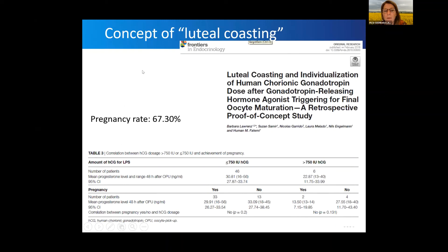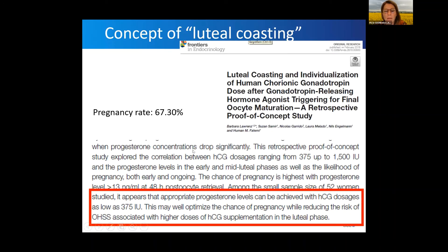We modified this concept in our setting by individualizing according to progesterone levels and the number of oocytes retrieved. In this individualized concept, we could show that we can sometimes achieve a nice pregnancy rate with an even lower amount of hCG. In some cases we administered only 375 units of hCG, depending mainly on the progesterone level two days after egg collection.